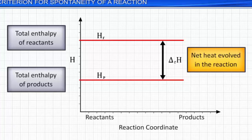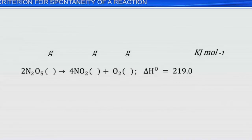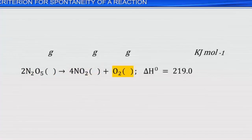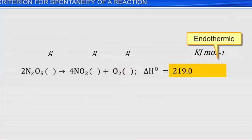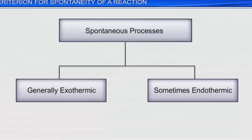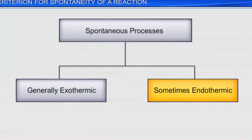Now let's consider another spontaneous reaction. Dinitrogen pentoxide decomposes spontaneously at room temperature into nitrogen dioxide and oxygen. This reaction, although spontaneous, is endothermic. From this, we can conclude that spontaneous reactions are generally exothermic, but some endothermic processes may also be spontaneous. Thus, decrease in enthalpy is not the only determining factor for spontaneity — let's look at another criterion for spontaneity.